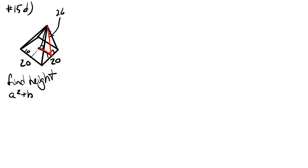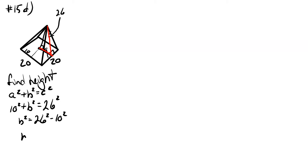Using a squared plus b squared equals c squared: side a is half of the base, which is ten. So ten squared plus b squared equals twenty six squared. Therefore b squared equals twenty six squared minus ten squared, which equals five hundred and seventy six. Taking the square root of five hundred and seventy six gives us twenty four. That value of b is our height.